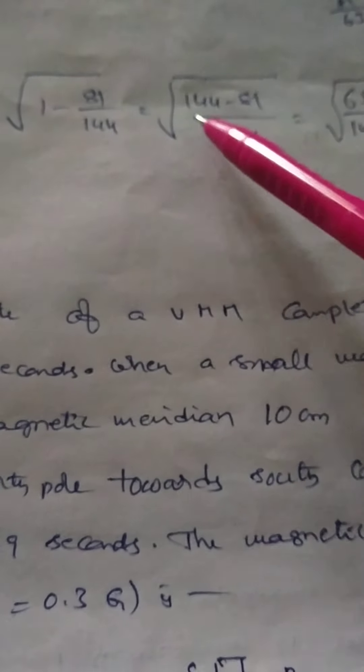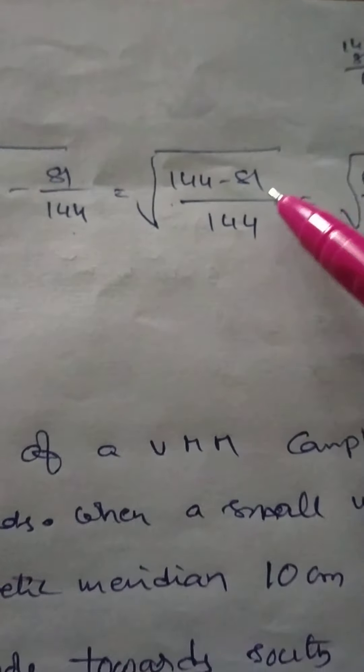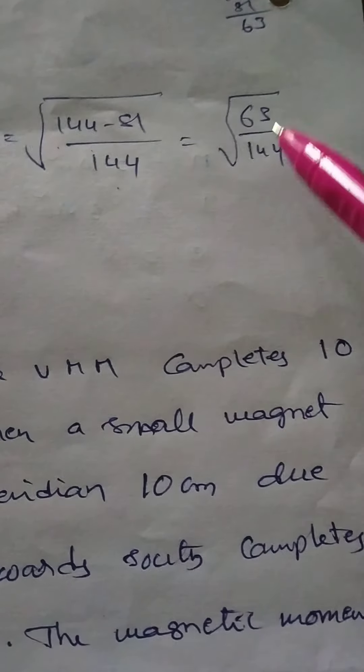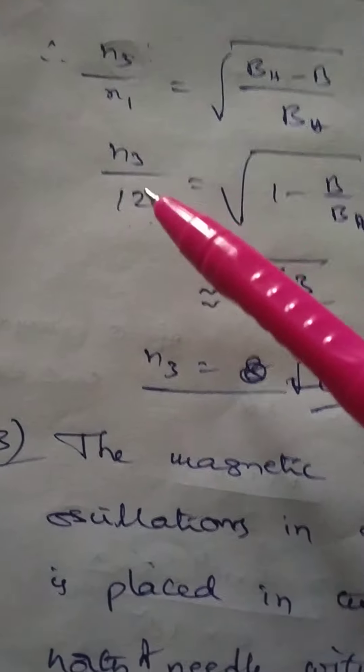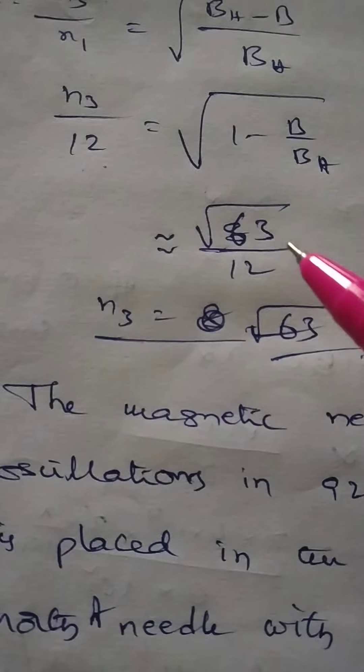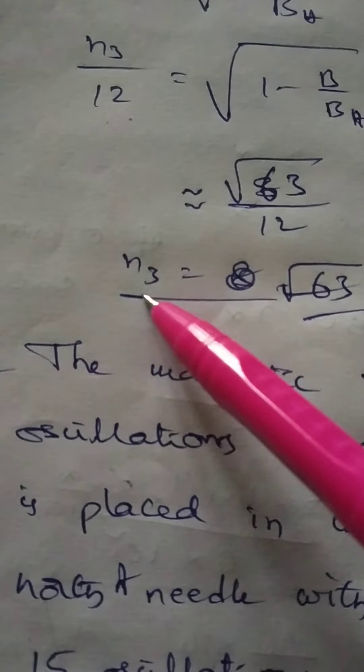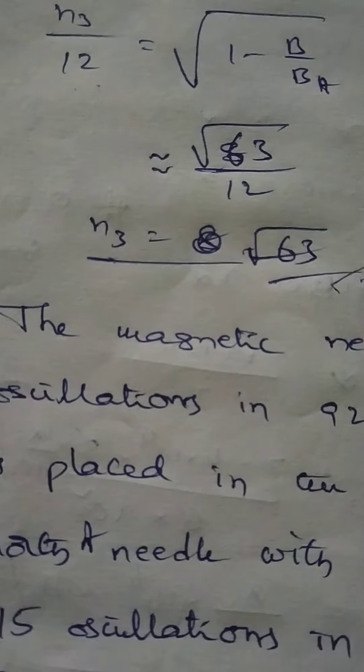1 − B/Bh = 1 − 81/144 = (144 − 81)/144 = 63/144. Therefore n3/12 = √(63/144), which gives n3 = √63.